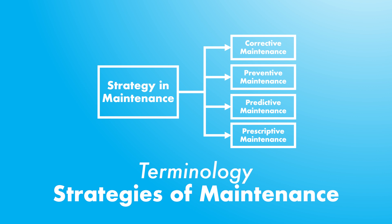In general terms, there is no consensus on maintenance strategies. However, we adopt the terminology of Meissner from 2021, which is relatively well known and accepted. In particular, we consider four types of maintenance: corrective, preventive, predictive, and prescriptive.